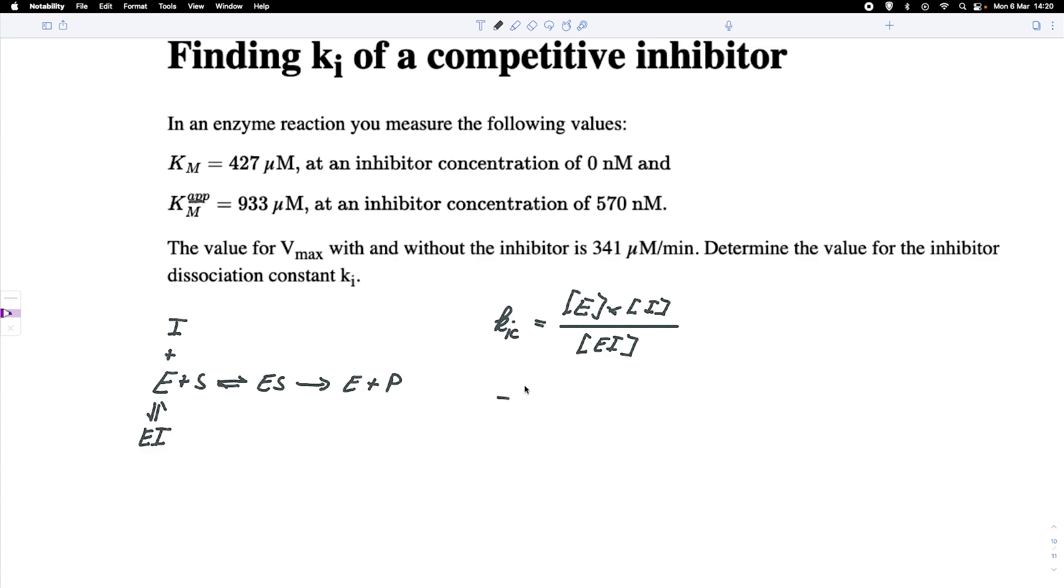So we have no inhibitor, and we would look at the parameters, at the enzyme parameters. So with no inhibitor we have a value for Vmax and a value for KM.